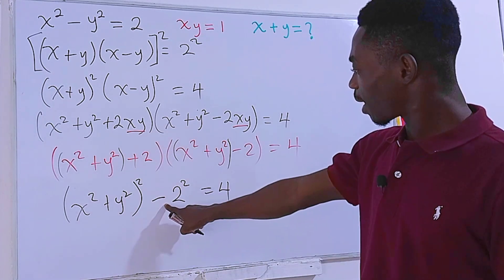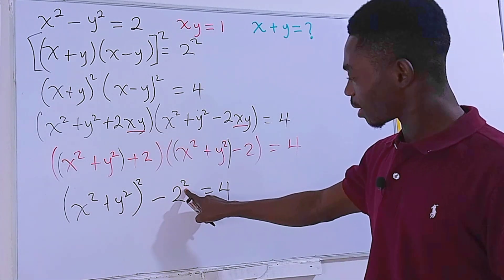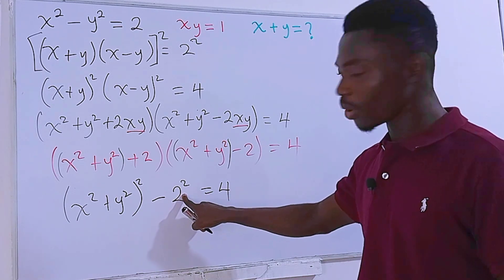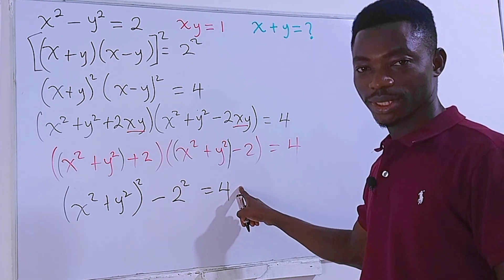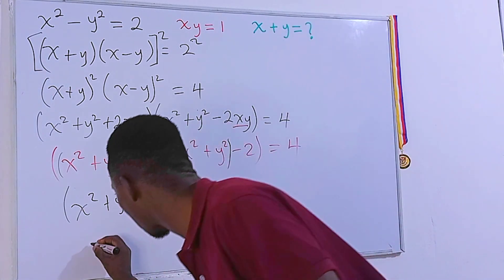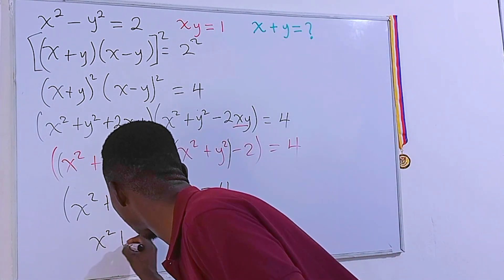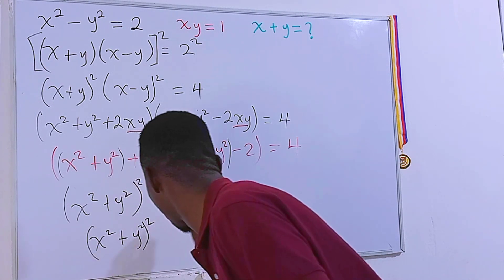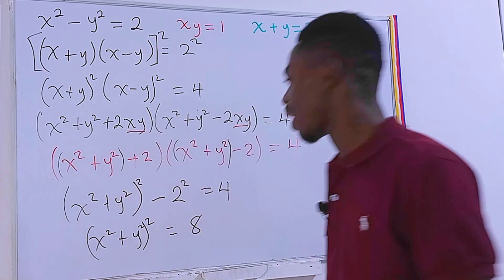Easy. Now, negative 2 squared. In fact, this 2 is not affecting this one. So this one will give us negative 4. If it comes here, it will be positive 4. So on the left-hand side, we have x squared plus y squared all squared, is equal to 8.